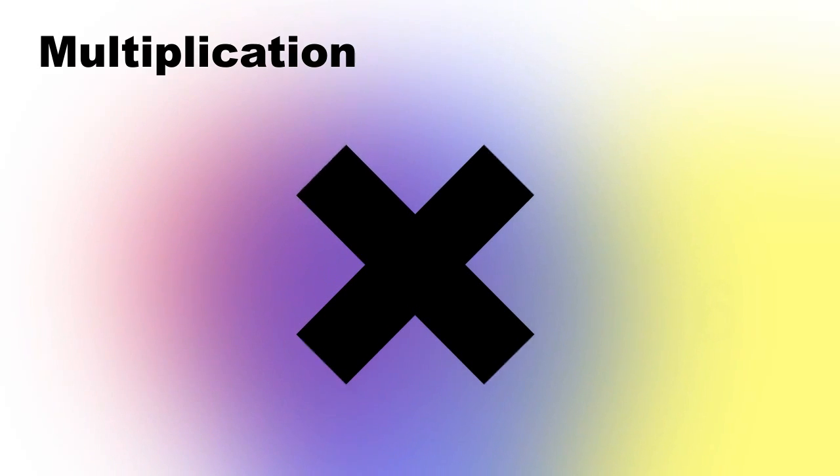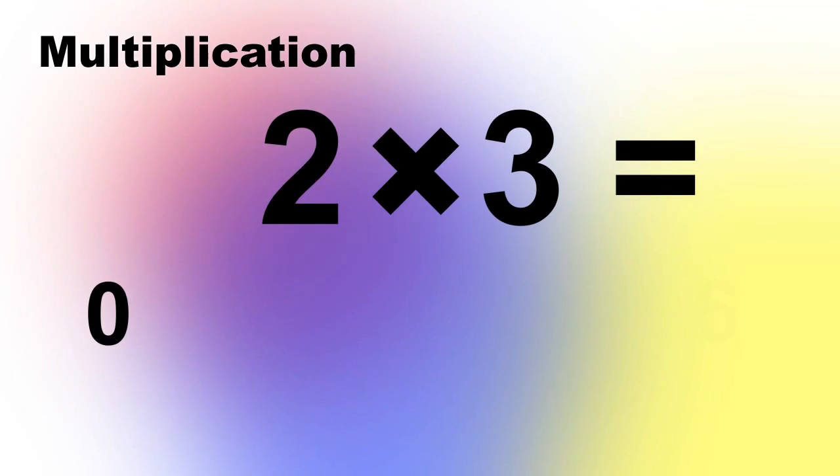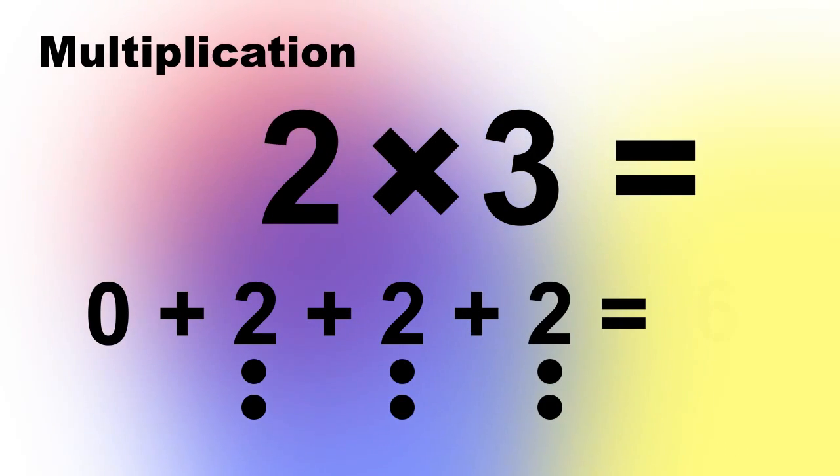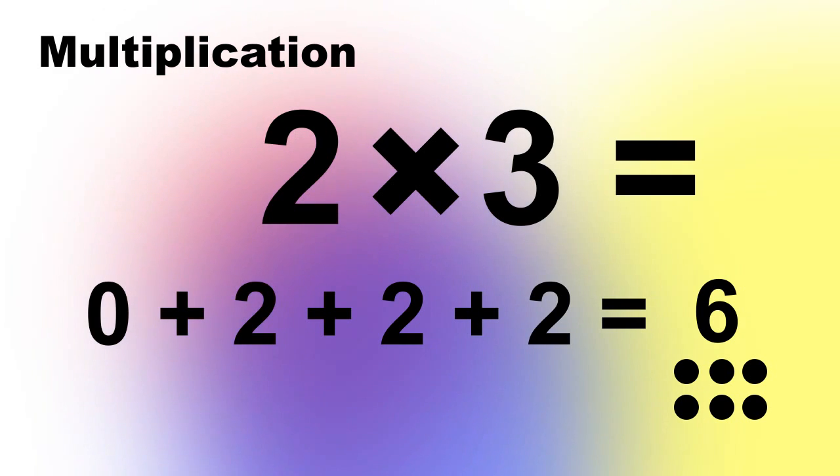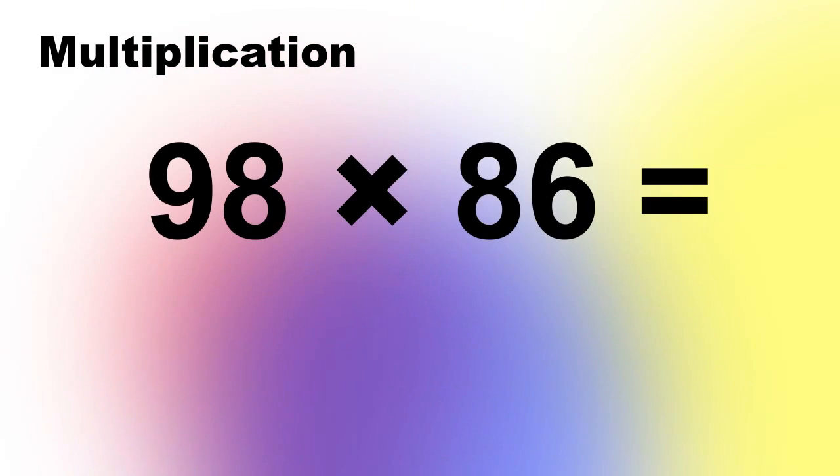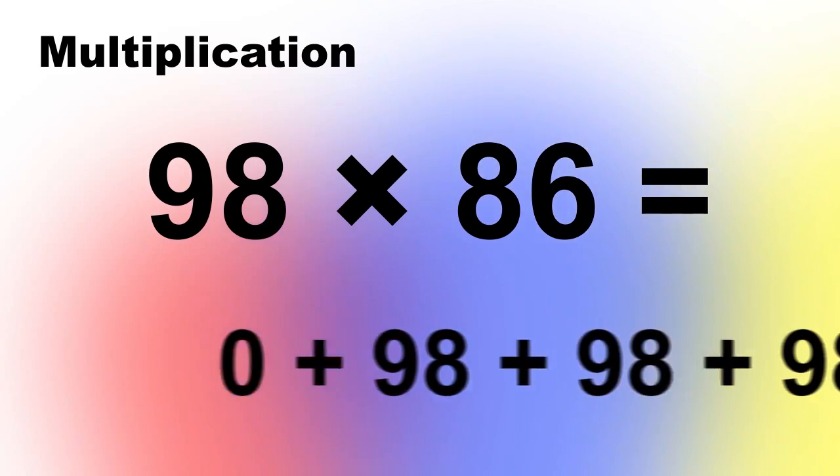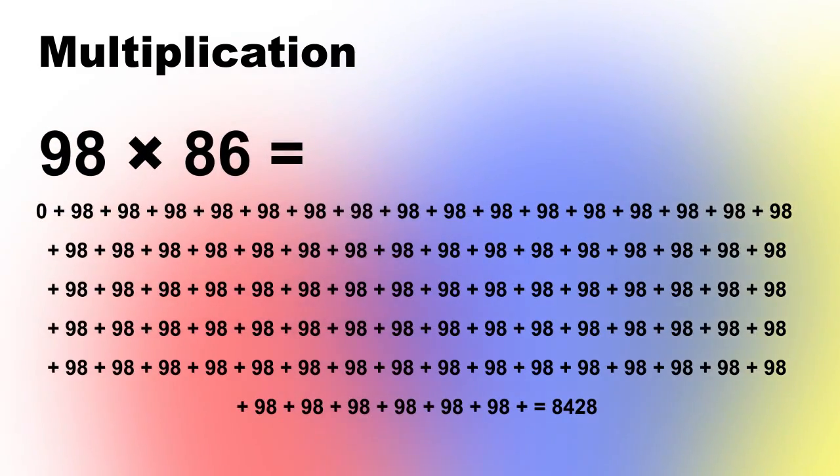We can define 2 times 3 as 0 plus 2 plus 2 plus 2. Any multiplication with whole numbers can be found this way. 98 times 86 is 0 plus 98 plus 98 plus 98 until there are 86 98s.